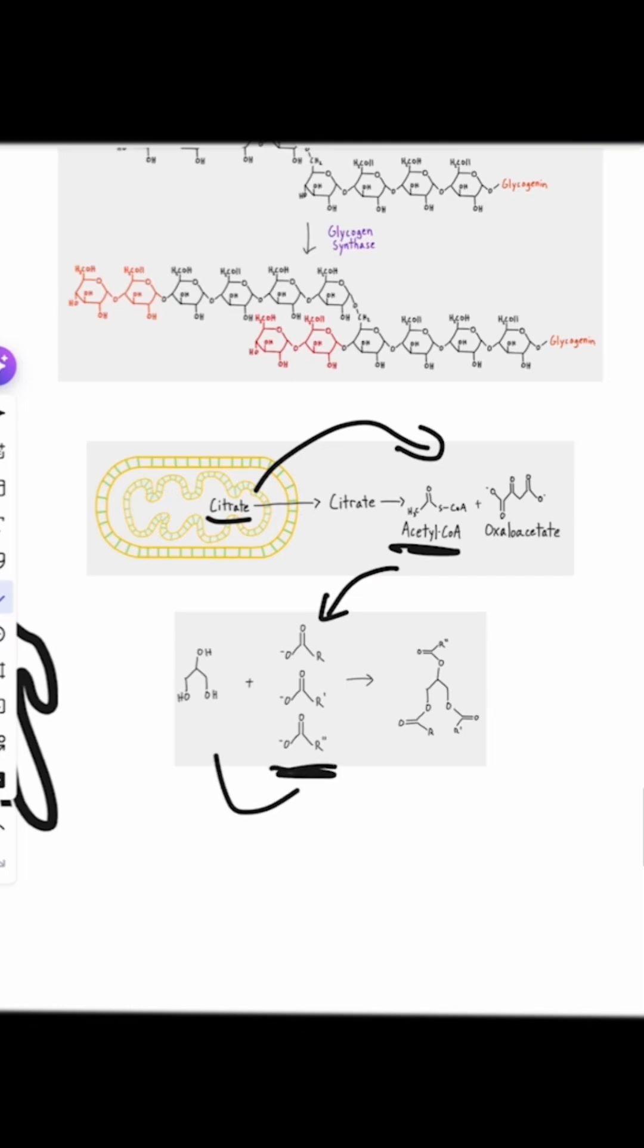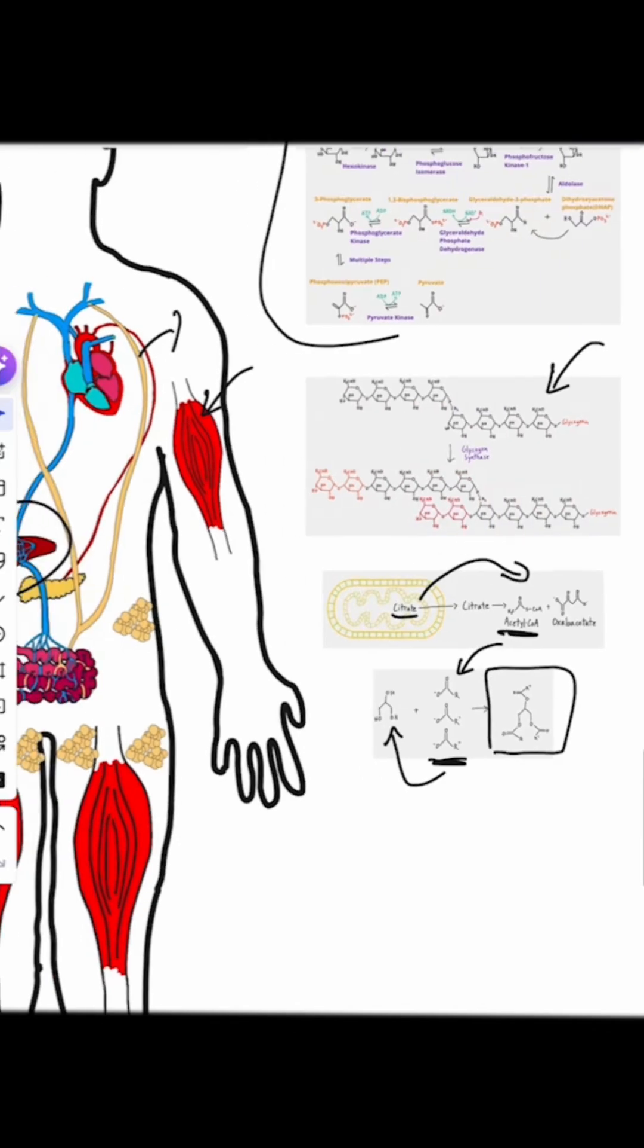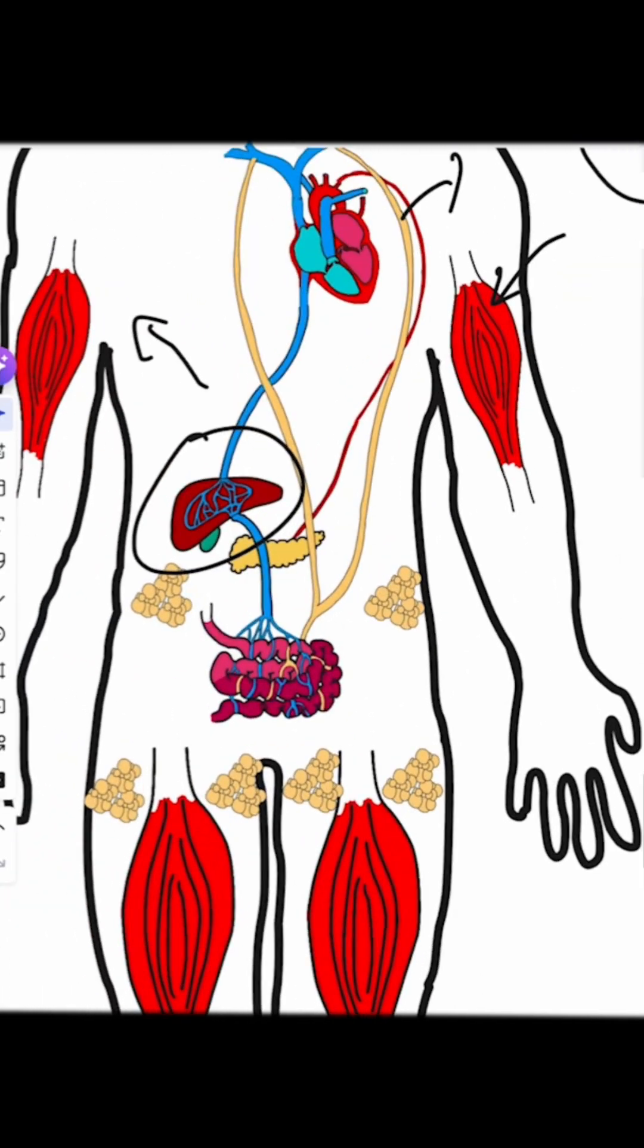Three fatty acids will then be paired to a molecule of glycerol. This is also happening in the liver to create a triglyceride. The triglycerides then get moved from the liver into the fatty tissue of the body, where they are stored for later usage.